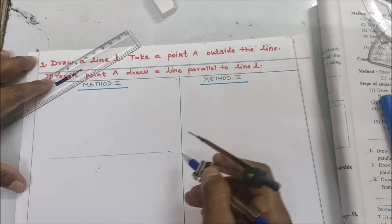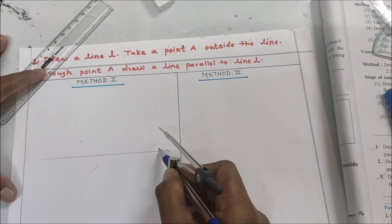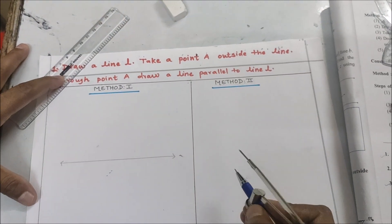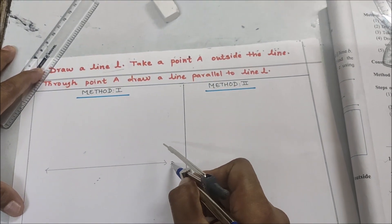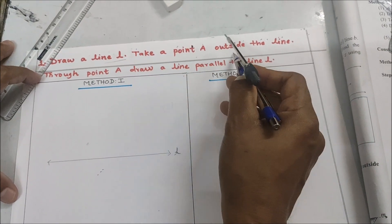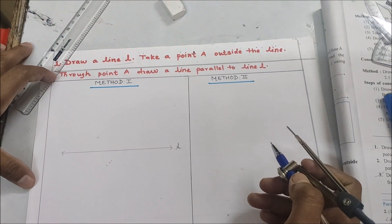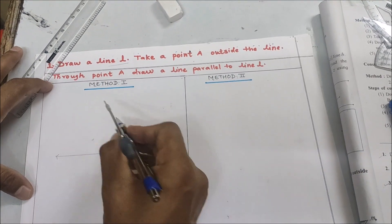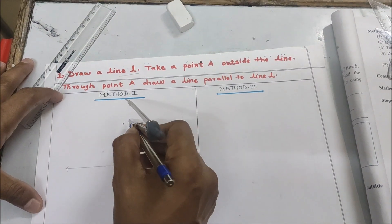You can see that I have made a line. A line has arrows at both ends, so you should make arrows at both ends. The name of this line is line l. Now take a point A outside the line — you can see here I have taken a point and we will name it as A.